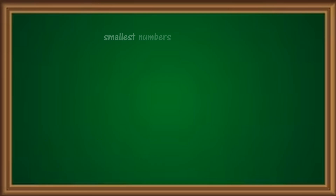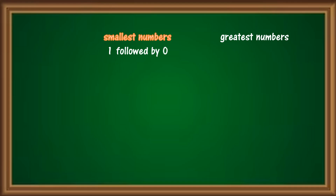Shall we form the smallest and greatest numbers now? We will begin with the smallest numbers. You know the rule — the digit 1 followed by the digit 0. Let's begin with the smallest 1-digit number. Which digit should we write? 1. Do we have to write 0 after 1? No, because we need only 1 digit. So, what is the smallest 1-digit number? 1.